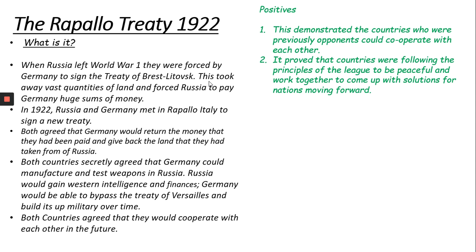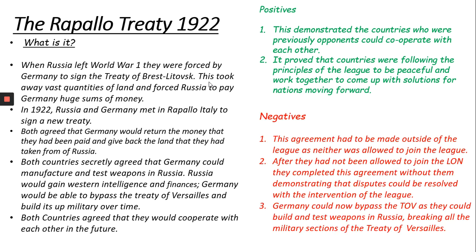This is good for the Russians because they are able to gain Western intelligence and finances. The Germans are going to like this because they can bypass the Treaty of Versailles and build up their military, even though they shouldn't really be doing that. Positives: this demonstrates that countries who were previously opponents could cooperate and work together. This proved that countries were following the League's principles of working together to come up with solutions moving forward. However, the negatives: it was made outside of the League of Nations. Neither of them were in the League, so Germany could actually go against the League, breaking the Treaty of Versailles by building and testing weapons in Russia.